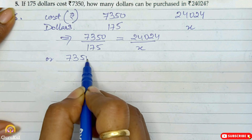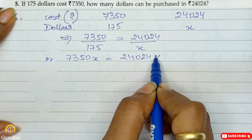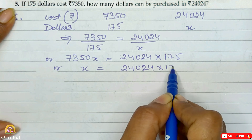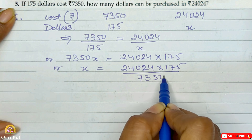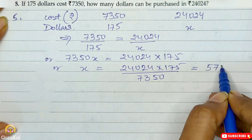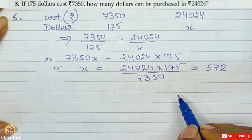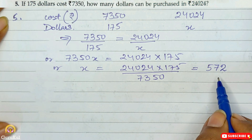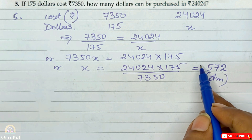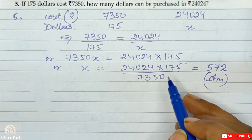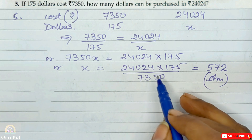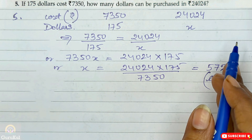7,350 x is equal to 24,024 into 175, and x is equal to 24,024 into 175 by 7,350. This calculation you need to show in rough work on the side, as showing all steps makes the video too lengthy. So this process you should show in rough work. Now question number 6.